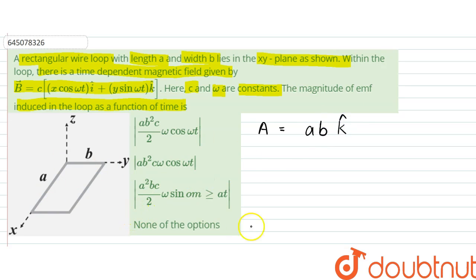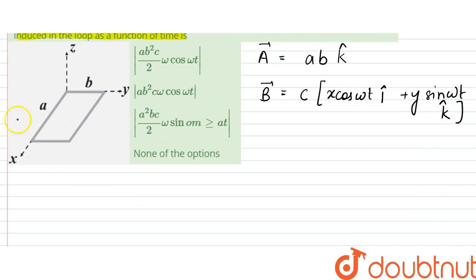And the magnetic field is given by c x cos omega t along i plus y sin omega t along k. This is the magnetic field given.